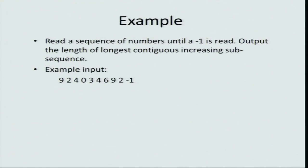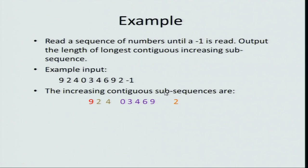That is a lot of words, so let us illustrate it with an example. Let us say that the input is the following numbers: 9 2 4 0 3 4 6 9 2, and then finally a minus 1, and we have to output the length of the longest contiguous increasing subsequence. So, 9 is an increasing subsequence, but the next number is 2 — 2 is less than 9. So 9 and 2 cannot be part of a subsequence where the numbers keep on increasing.